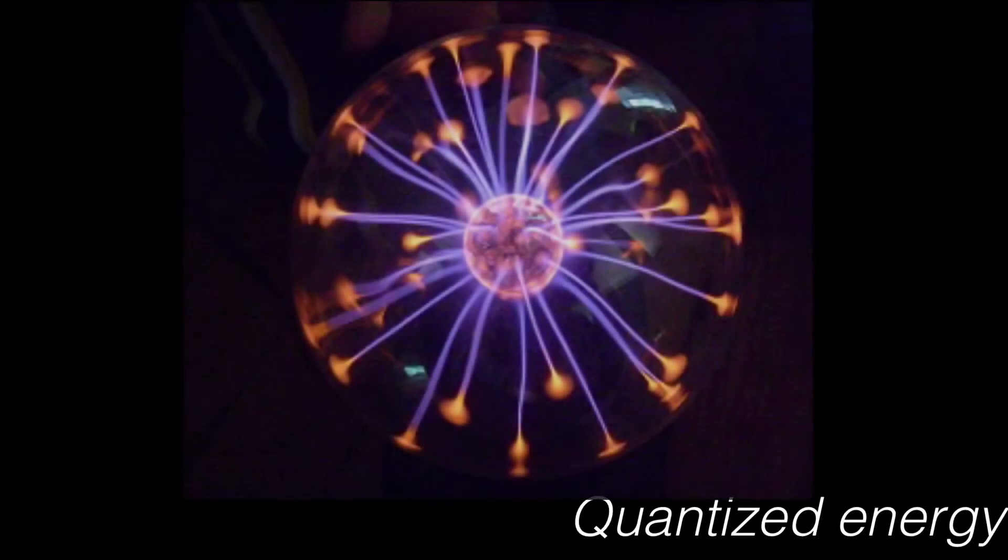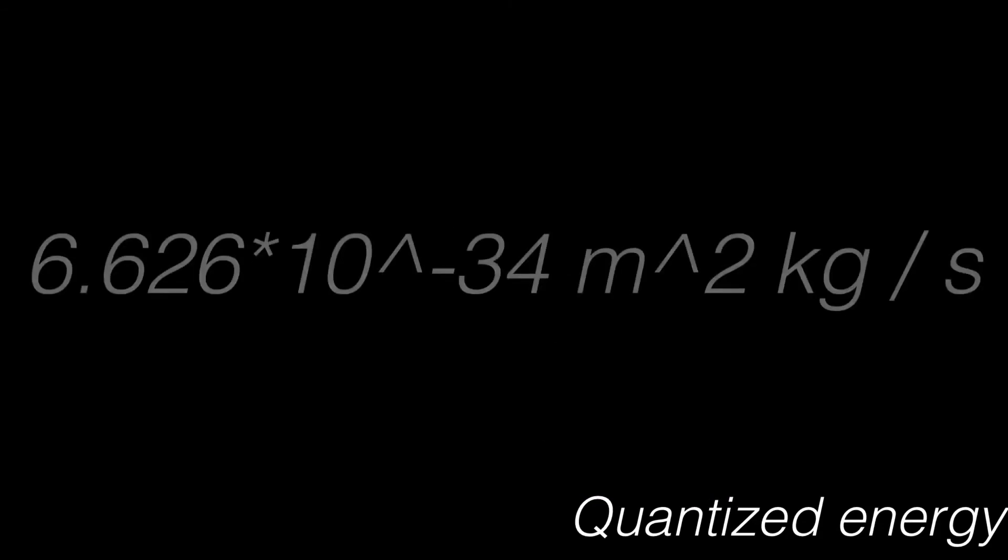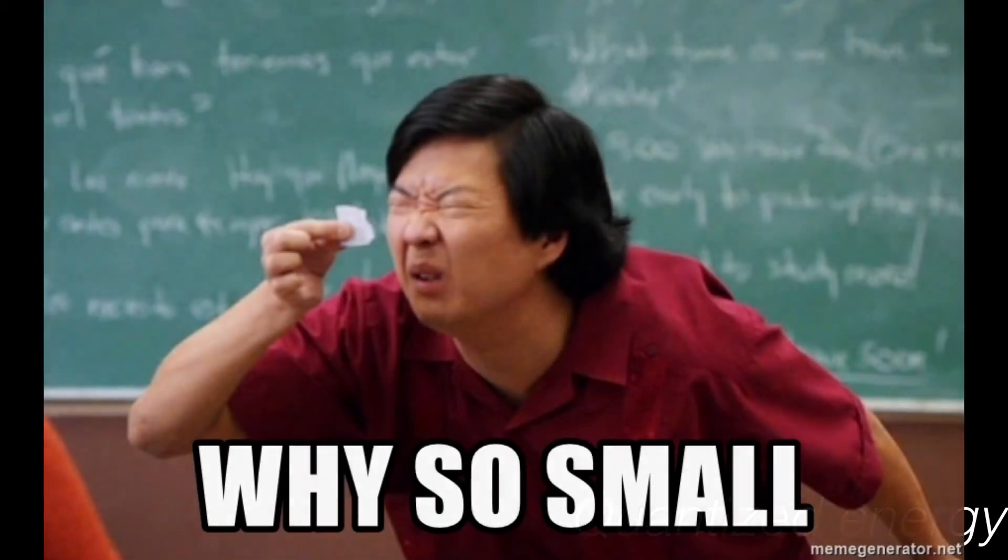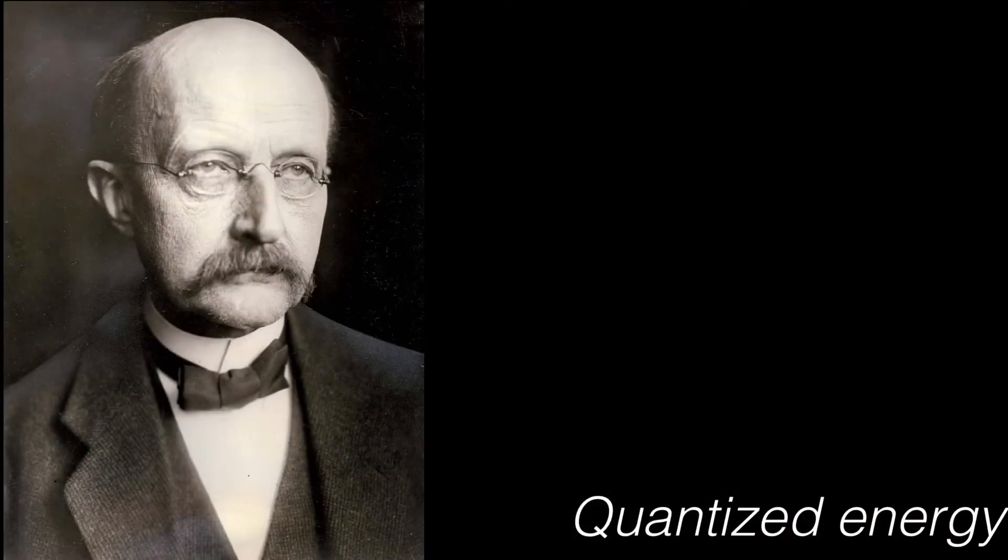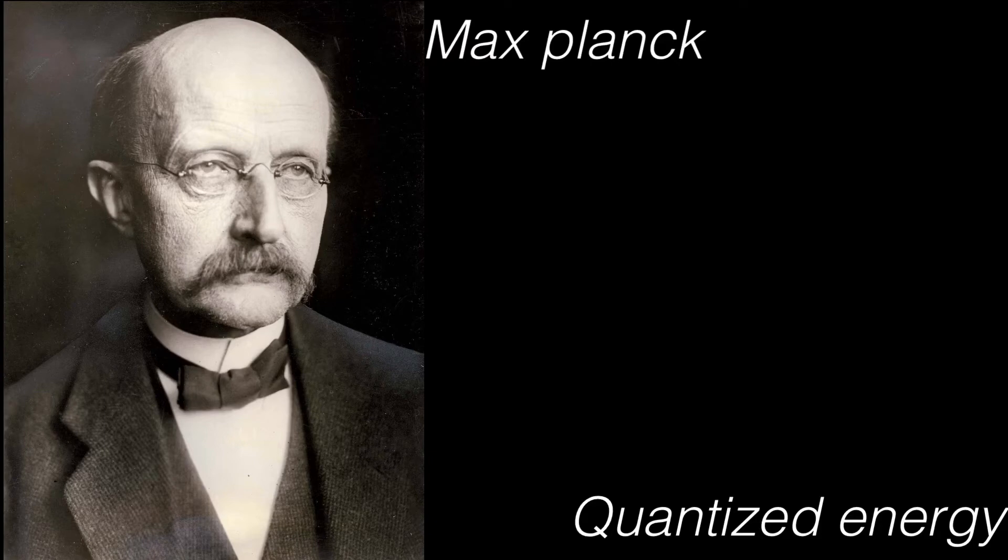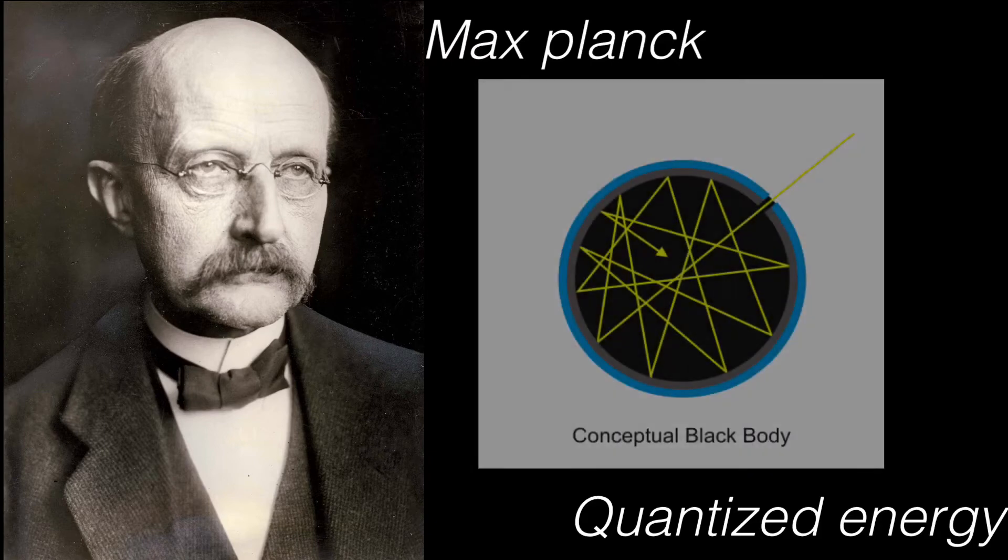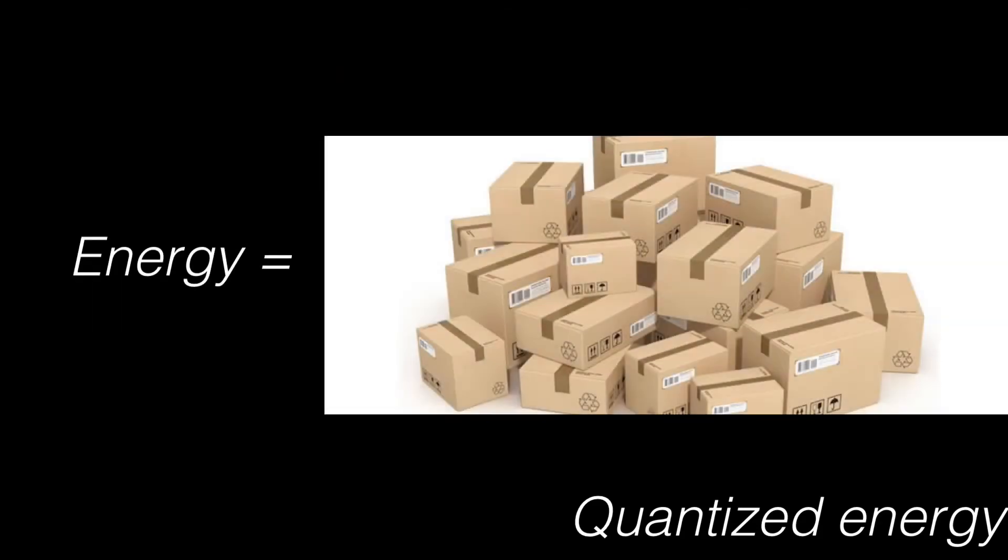Next up, we're going to talk about quantized energy. To talk about quantized energy, I have to mention something called Planck's constant: 6.626 times 10 to the negative 34th meter squared times kilogram over second. Have you ever wondered why this number is so small? Well basically, there's a scientist named Max Planck. When he was doing an experiment on black body radiation, he realized that energies are sent out by number packs.